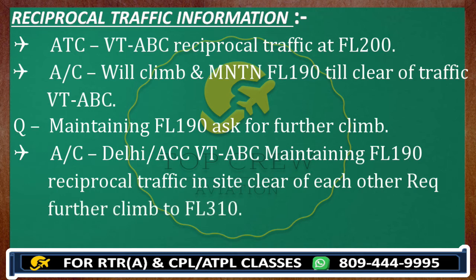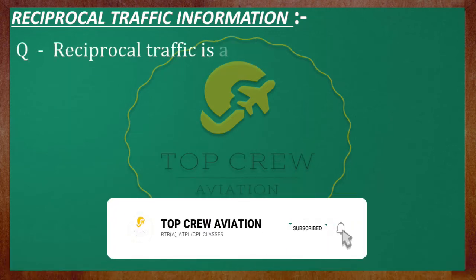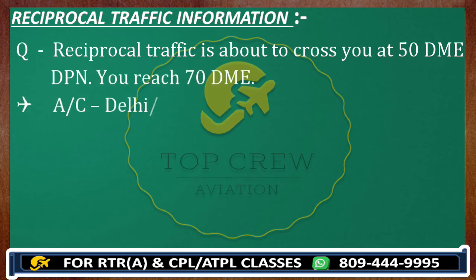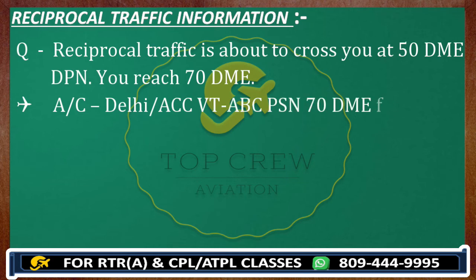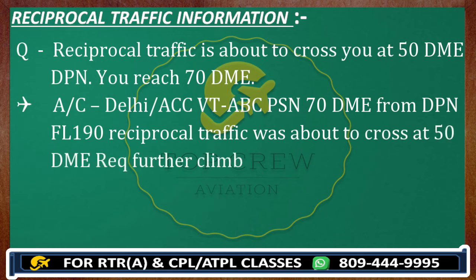Now you may get a question in the exam in terms of DME. Like: reciprocal traffic is about to cross you at 5-0 DME Delhi Papa November, you reach 7-0 DME. So how you are going to react: Delhi control, Victor Tango Alpha Bravo Charlie, position 7-0 DME from Delhi Papa November, flight level 190. Reciprocal traffic was about to cross at 5-0 DME, request further climb to flight level 310.